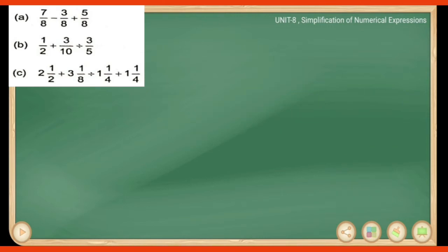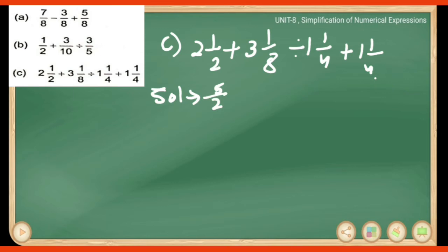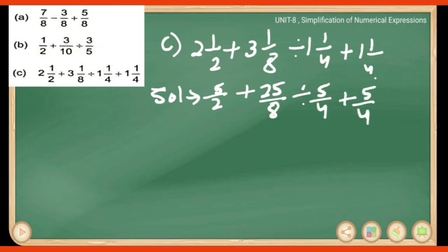Part C: 2 and 1/2 plus 3 and 1/8 divided by 1 and 1/4 plus 1 and 1/4. We first convert the mixed numbers to improper fractions: 2 and 1/2 becomes 5/2, 3 and 1/8 becomes 25/8, and 1 and 1/4 becomes 5/4. So the expression becomes: 5/2 plus 25/8 divided by 5/4 plus 5/4.